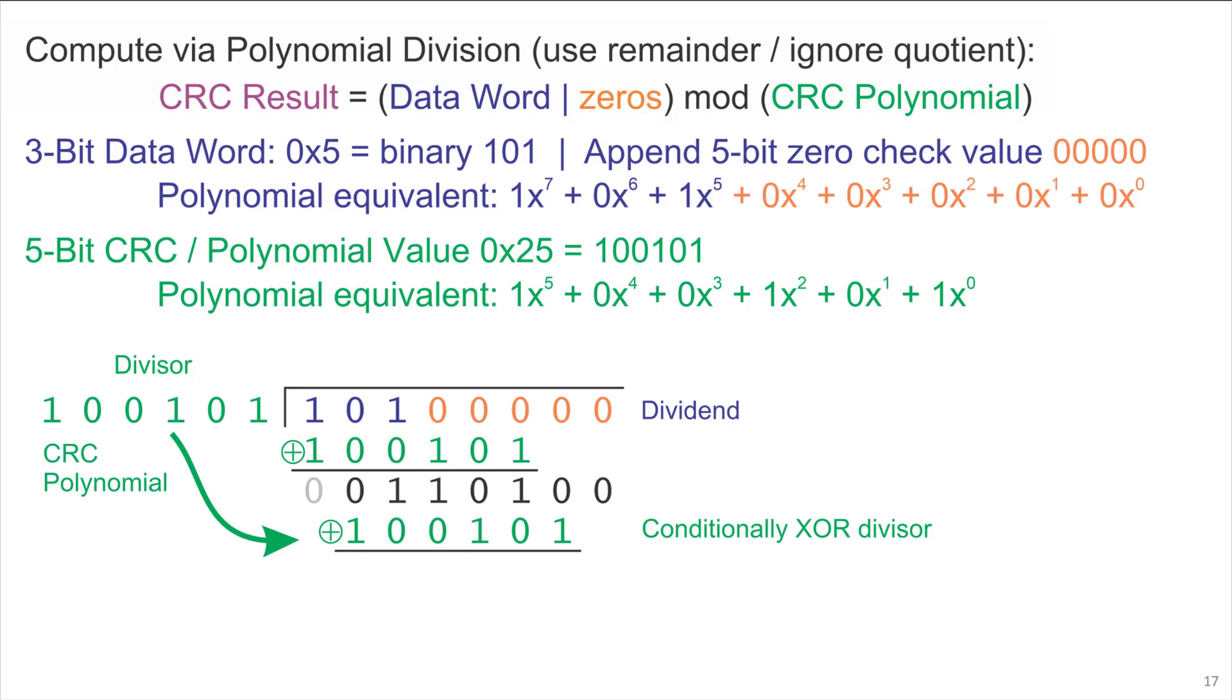This time, however, the divisor is too big to be subtracted from the remaining dividend, so instead of doing the XOR, we cancel it out and do no operation. That still ensures that the topmost bit is 0, so that coefficient drops out, and we're left with 110100 as the remaining dividend.